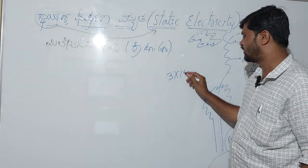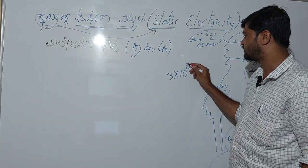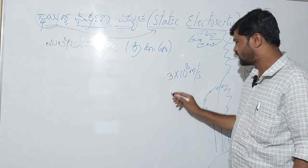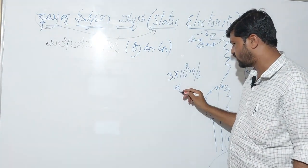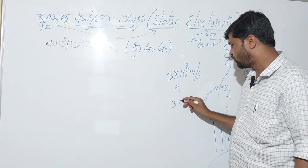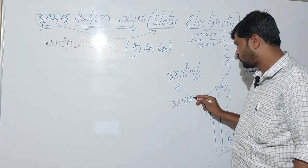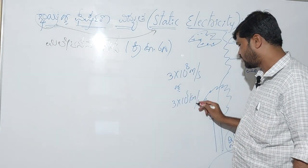The speed is 3 × 10 to the power of 8 meters per second, which is 3 × 10 to the power of 5 km per second — that is 3 lakh km per second.